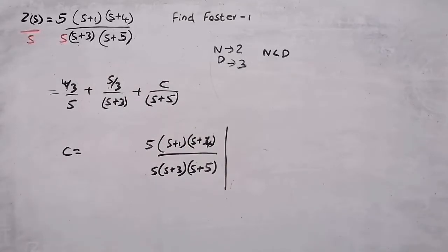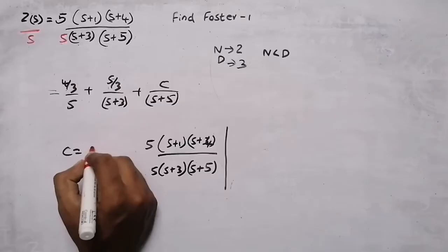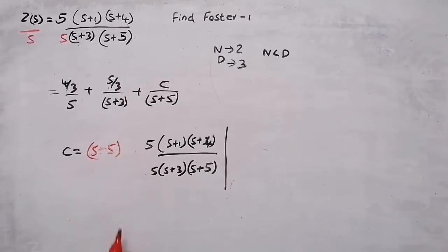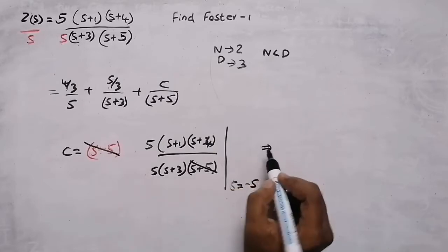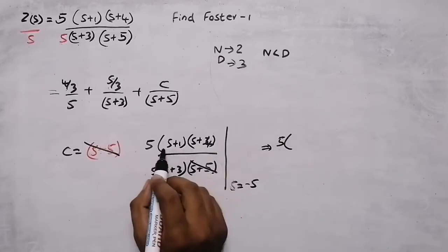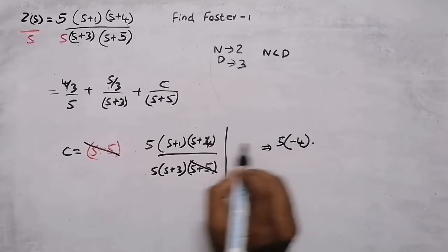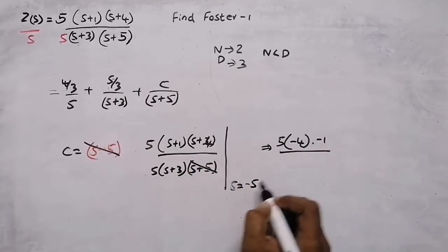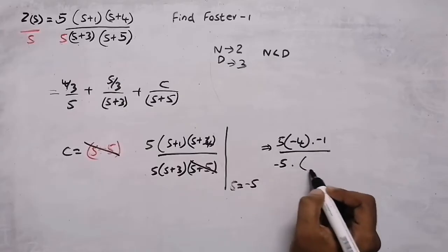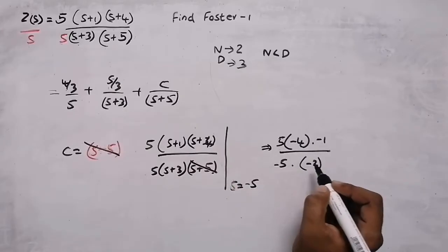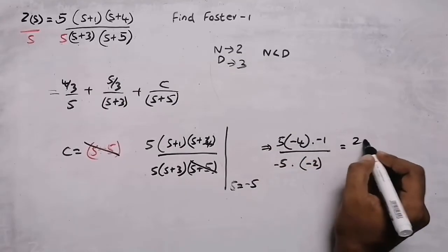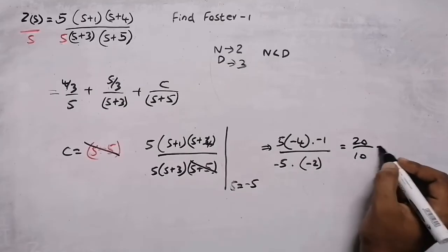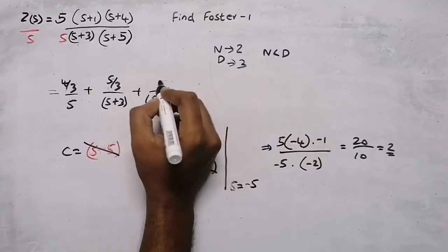For finding C, multiply by s plus 5 and evaluate at s equals minus 5: 5 times minus 5 plus 1 times minus 5 plus 4, divided by minus 5 times minus 5 plus 3. That gives 5 times minus 4 times minus 1, divided by minus 5 times minus 2, which is 20 over 10, so C equals 2.